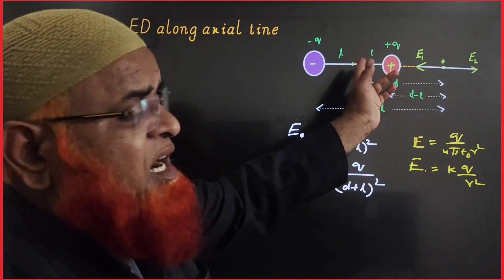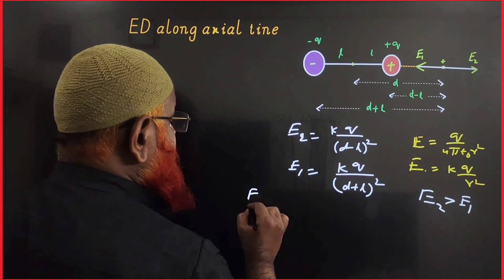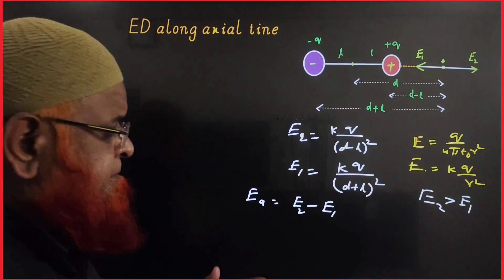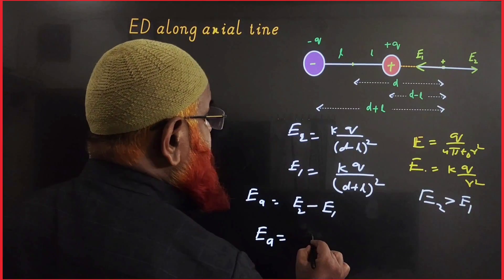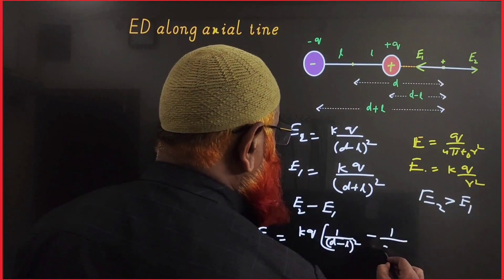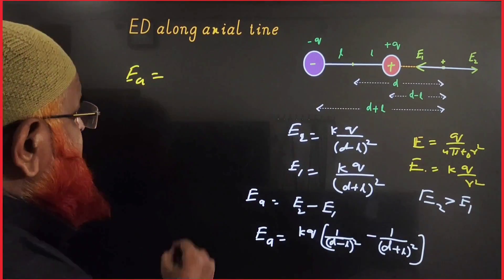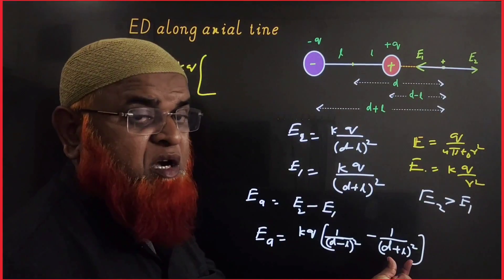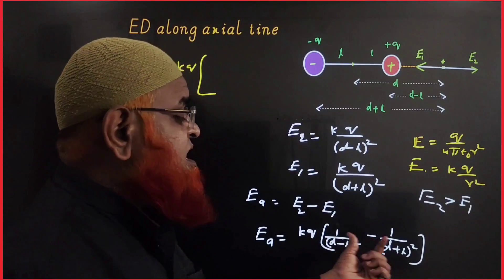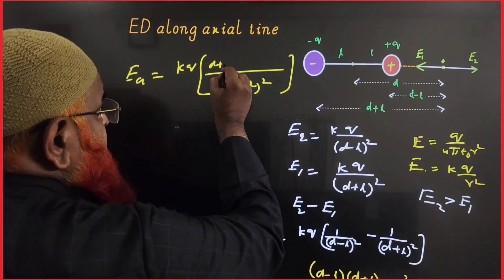Both electric field intensities act along the same direction at the same point, but E2 is greater than E1. Therefore, the net electric field along the axial line is E2 minus E1. Taking KQ common, you subtract 1/(D − L)² minus 1/(D + L)². Taking D − L and D + L from each denominator, D − L times D + L equals D² − L², and this appears twice in the denominator giving (D² − L²)².